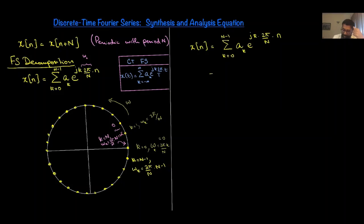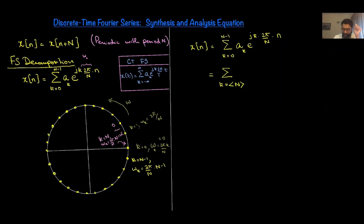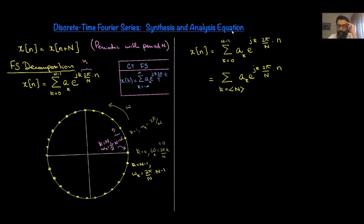One notation we use to represent this flexibility is to say k ranges over any N consecutive integers, rather than specifying that k starts at zero. This is the discrete-time Fourier series synthesis equation — it expresses x[n] as a superposition of N complex exponential harmonics. Our next job is to determine the Fourier series coefficients a_k given a periodic signal, which means deriving the analysis equation.